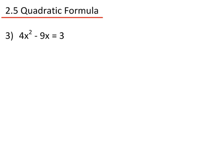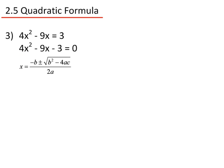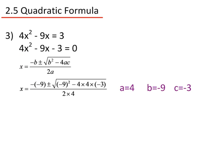Question 3. First, we need to rearrange it into the right format: 4x² − 9x − 3 = 0. Now identify a, b and c: a equals 4, b equals minus 9 and c equals minus 3. Taking the formula, we substitute in these values. You need to be careful because b and c are both negative numbers. So we have minus minus 9, plus or minus the square root of minus 9 squared minus 4 times 4 times minus 3, all divided by 2 times 4.